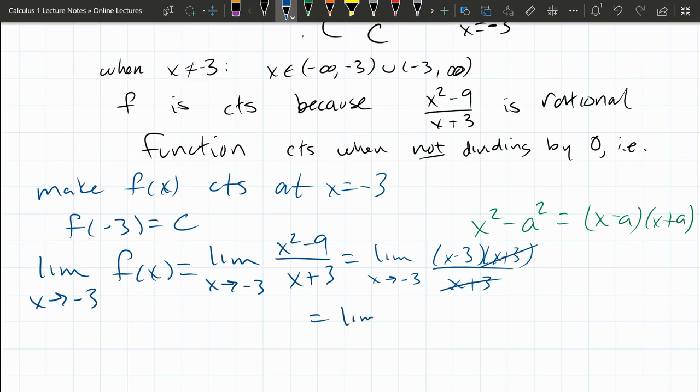And we're left with just the limit as x approaches negative 3 of x minus 3. Now from here, we can plug in negative 3 in for x. We get negative 3 minus 3 is negative 6. The reason we couldn't plug that in earlier is because we would have been dividing by 0 at this step. So I did need to cancel this x plus 3 in the denominator.